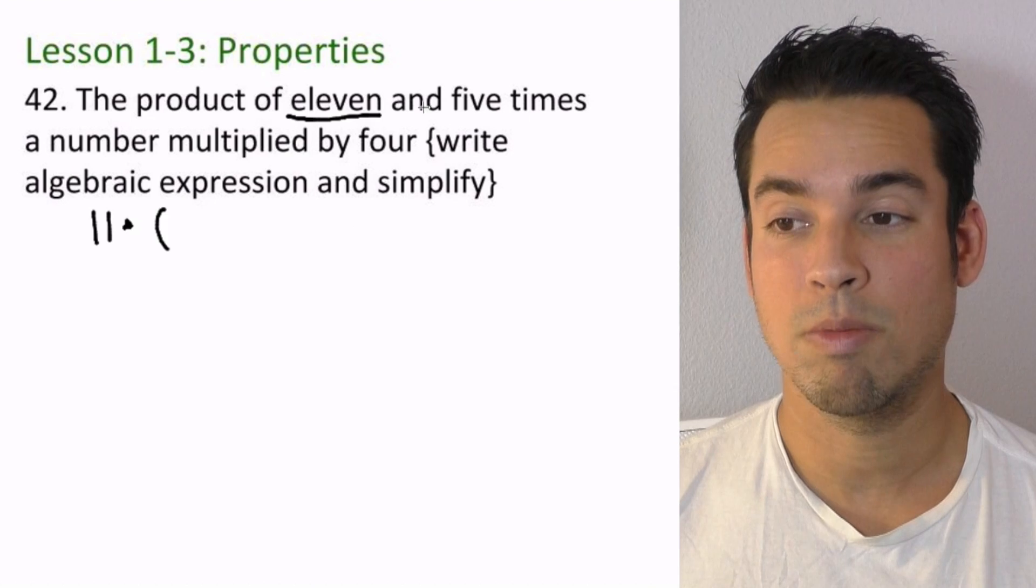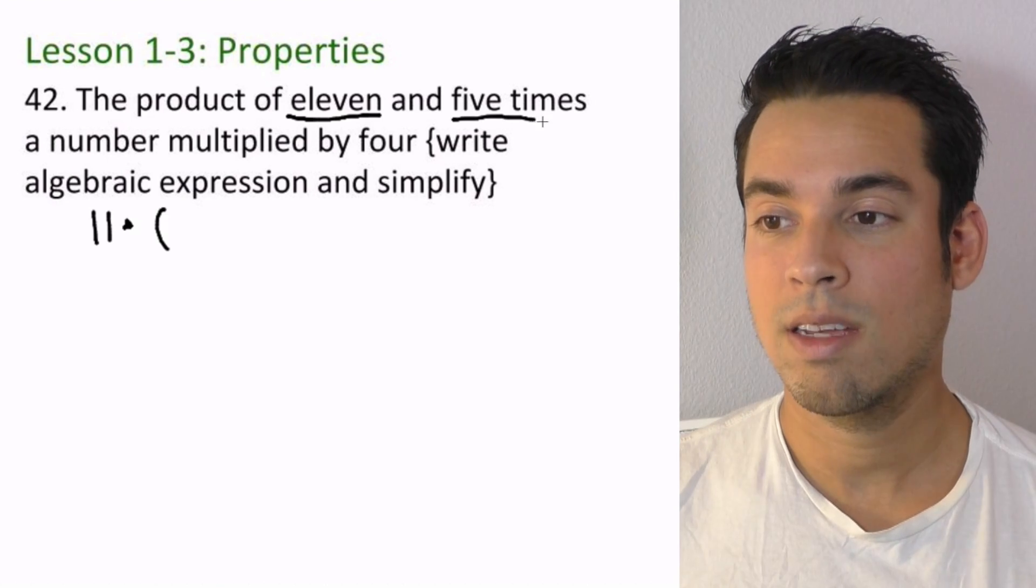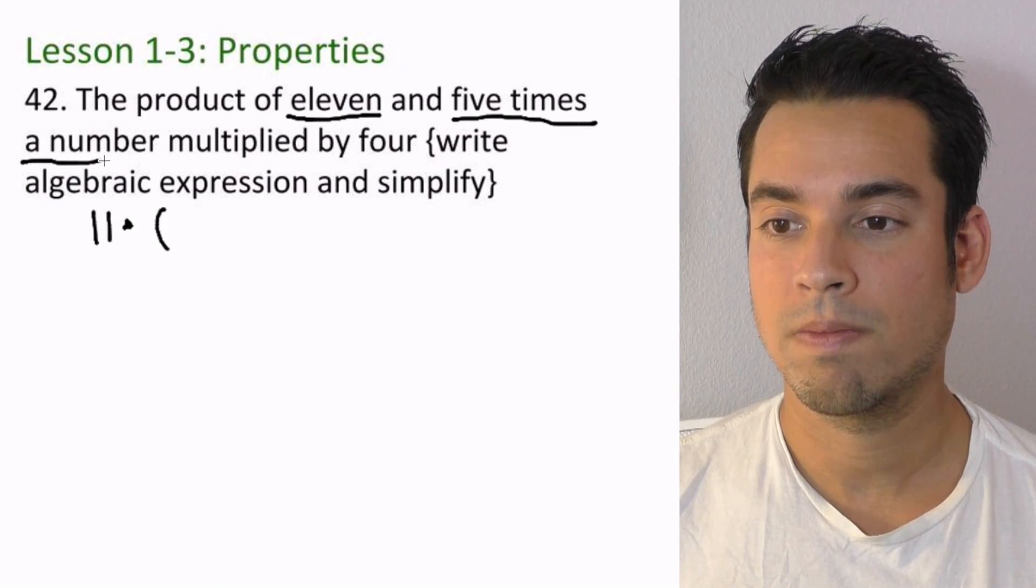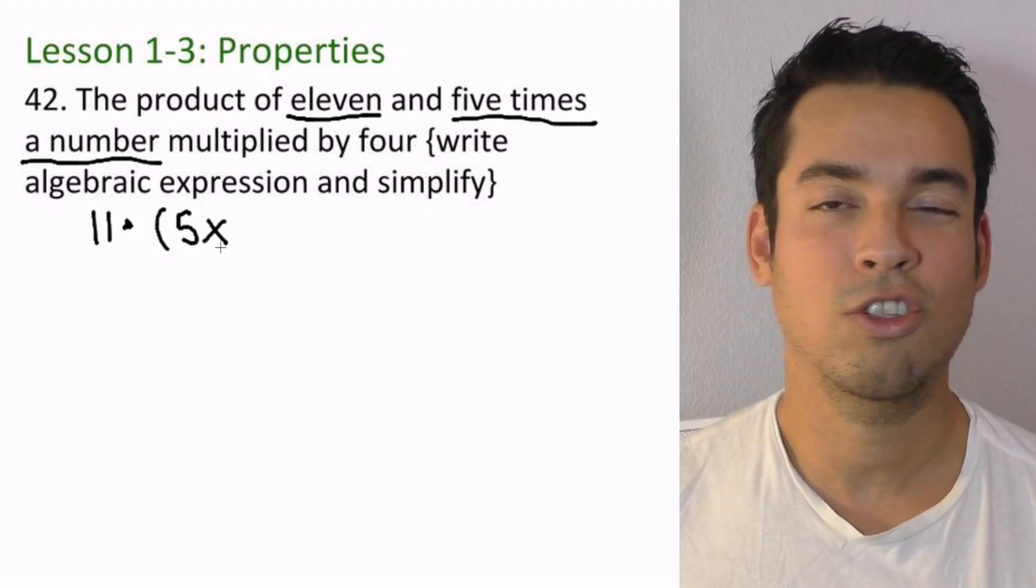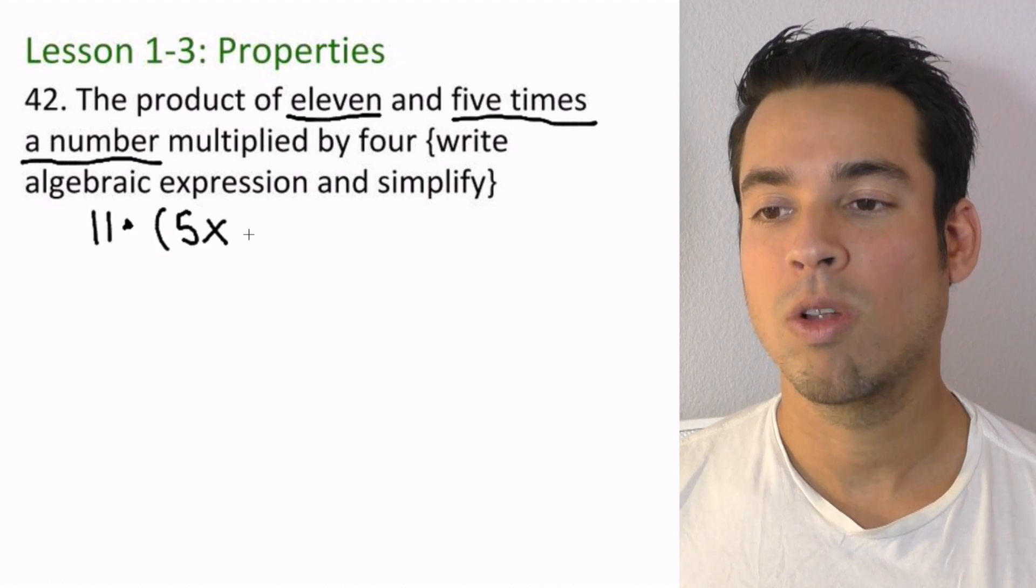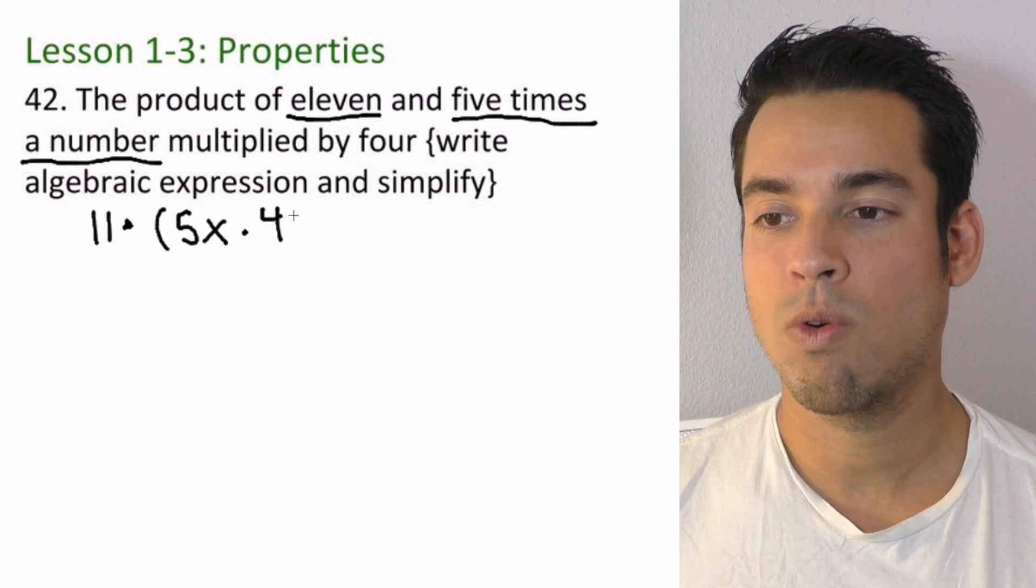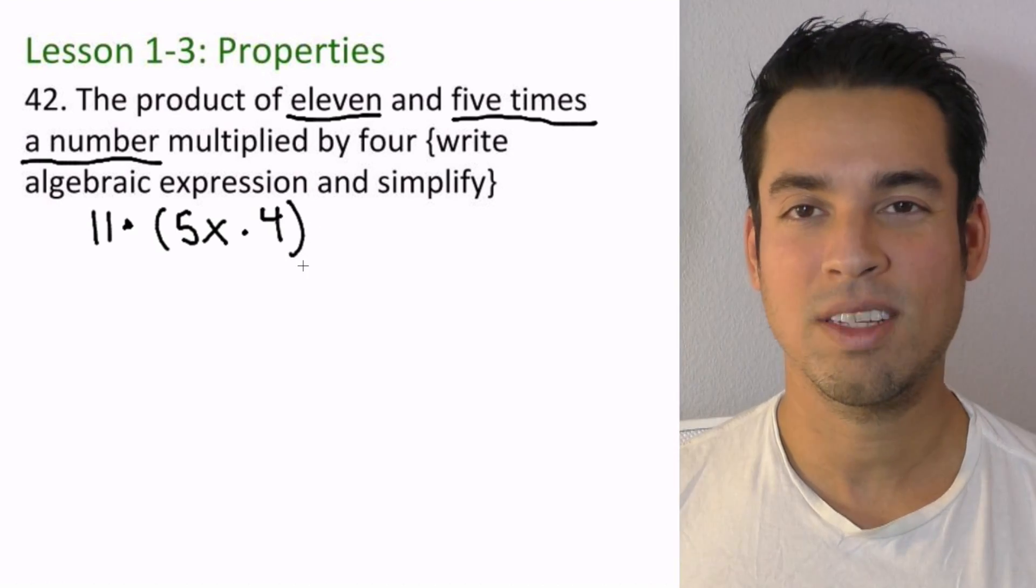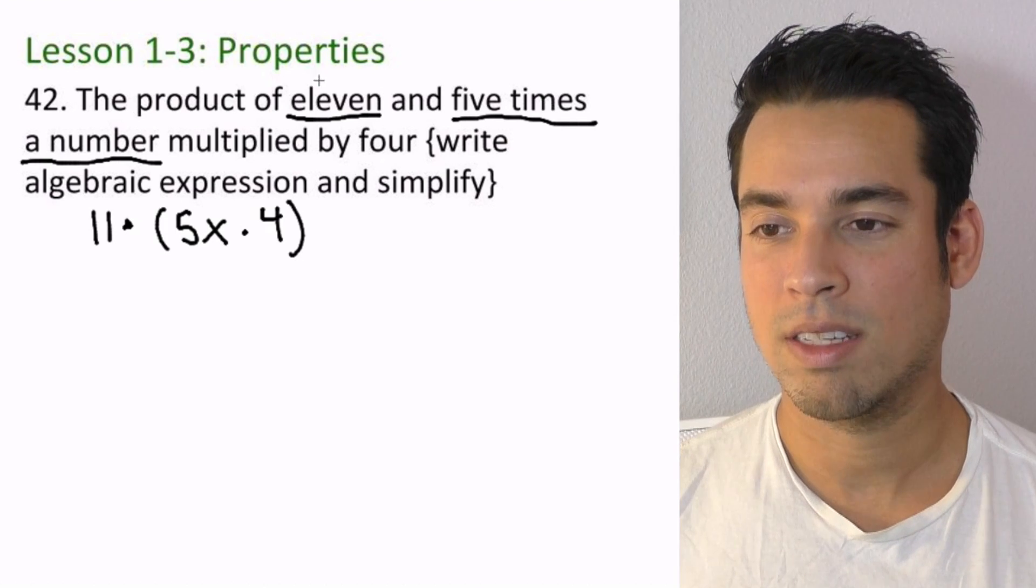Let's start with that. 5 times a number—I'll just say x, you can say whatever you want—5 times a number, multiplied by 4. Okay, you see how that all works? So I got every single piece now in there. So this whole number is multiplied by 4.